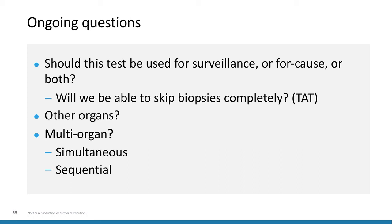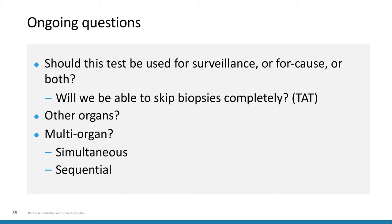To conclude: DNA is clearly an informative molecule, and cell-free DNA may allow for non-invasive assessment of important conditions. It is an important new technology to detect acute rejection in renal transplantation, and it's more informative than existing tools — in particular serologic measures such as serum creatinine. The first-generation test was proven effective at differentiating antibody-mediated rejection from a quiescent state, though less so for T-cell-mediated rejection. The second-generation testing showed better differentiation for both antibody and T-cell-mediated rejection from the quiescent state, possibly due to different lab technologies between the two tests. We very much appreciate your participation and look forward to further discussions on this topic.